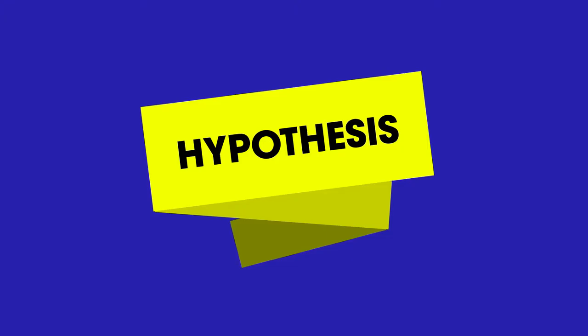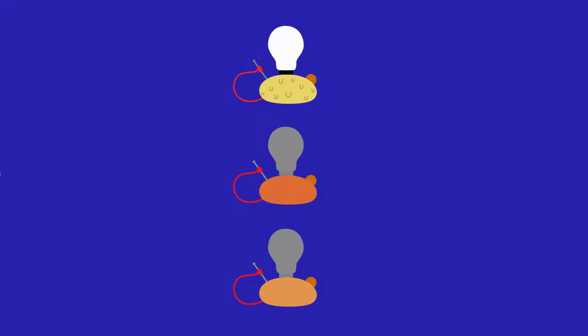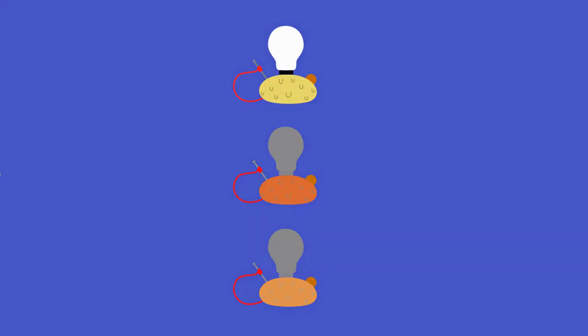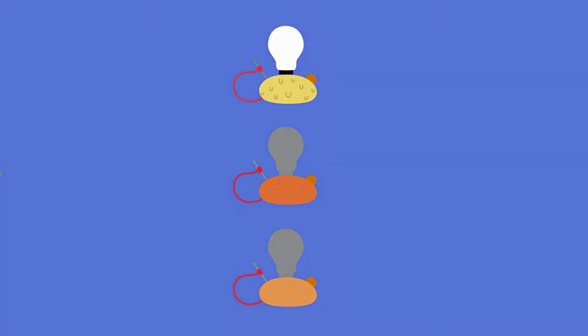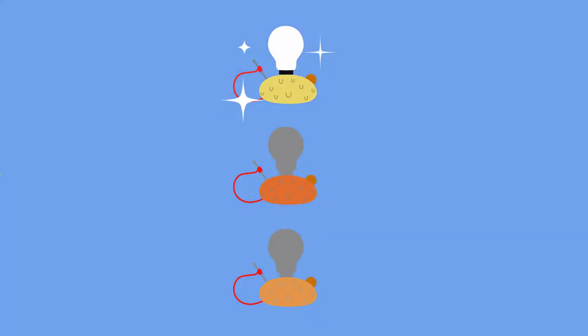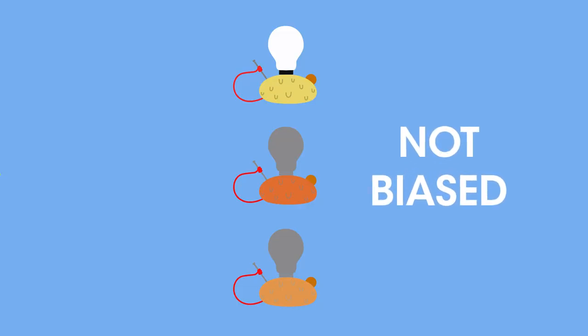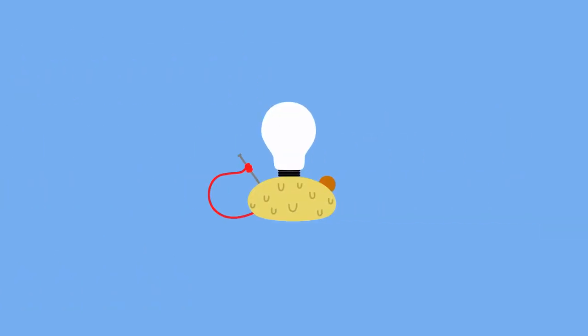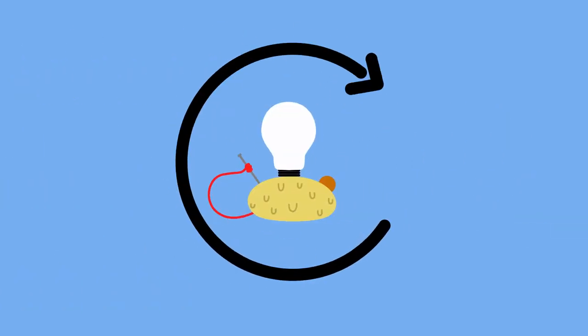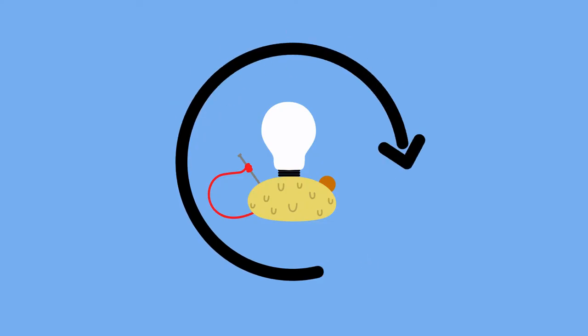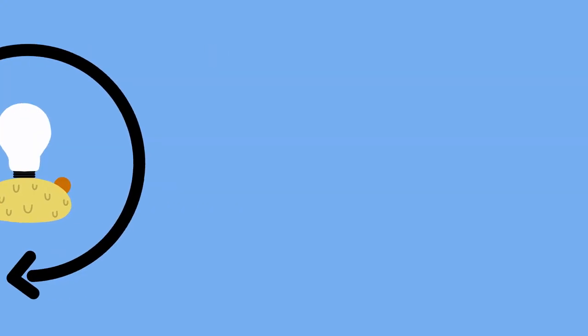Any investigation usually starts with a hypothesis. The variables have to be identified and ways found to control all the variables, except for the variable that is being tested. This goes some way to ensuring that the investigation is not biased. Then the experiment is performed. It may be repeated numerous times in order to increase reliability.